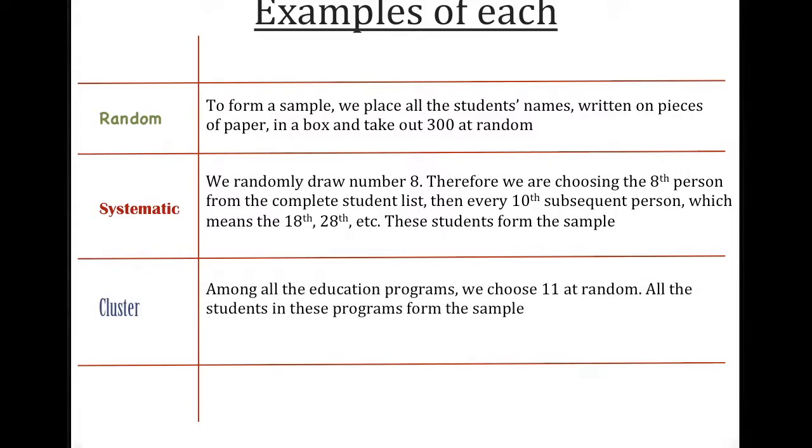For a cluster example, it's as in all the education programs, we choose 11 programs at random. And all of the students in these programs form the sample. So we choose 11 programs. They all deal with education, so they're homogeneous, and they're all students, so they're homogeneous. But we only choose 11 clusters, 11 clusters of programs.